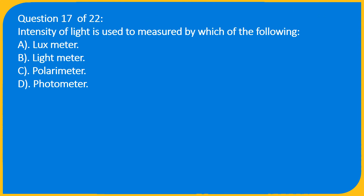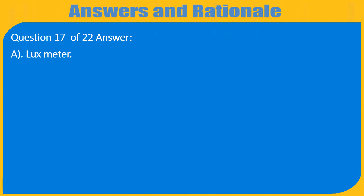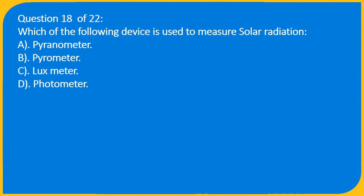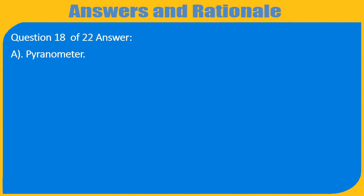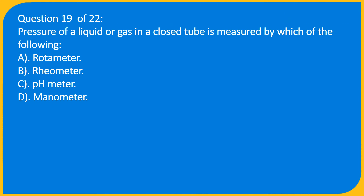Question 17 of 22: Intensity of light is measured by which of the following? A. Lux meter, B. Light meter, C. Polar meter, D. Photometer. Answer: A. Lux meter. Question 18 of 22: Pressure of a liquid or gas in a closed tube is measured by which of the following? A. Botometer.